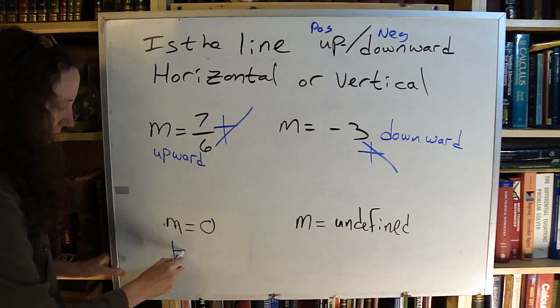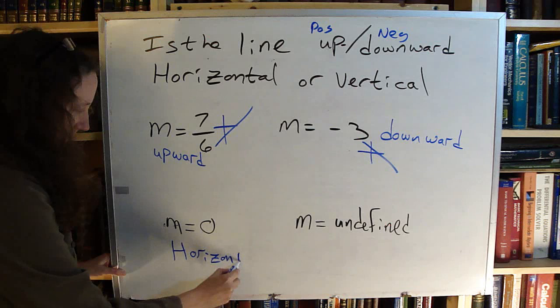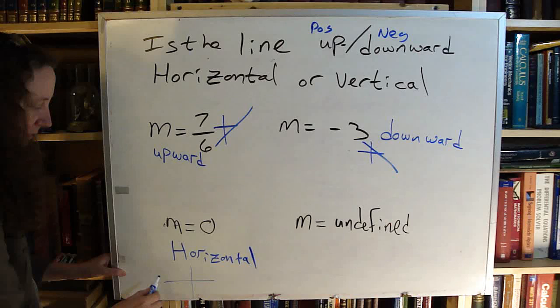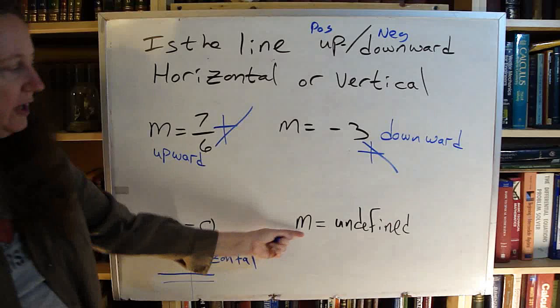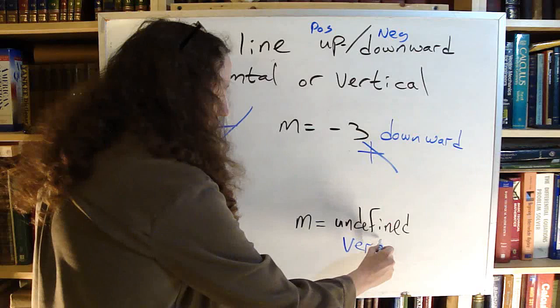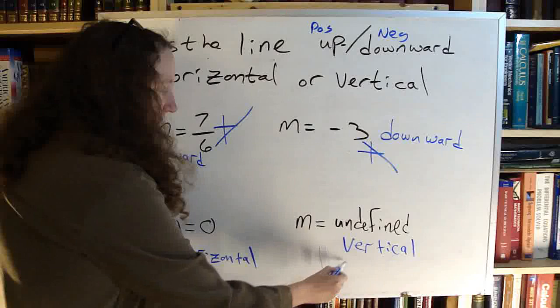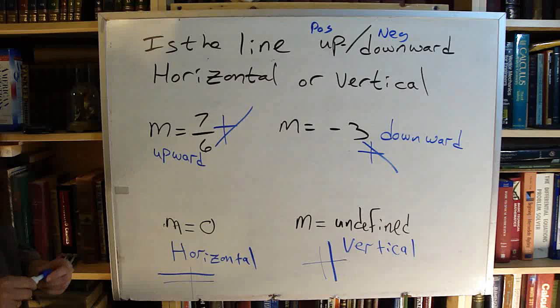So this one is horizontal. So if we were drawing a graph of it, it would be a line straight across. So if we were drawing a graph of it, it would be a line straight up and down.